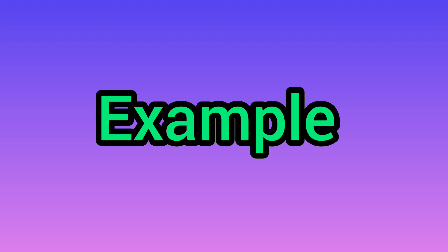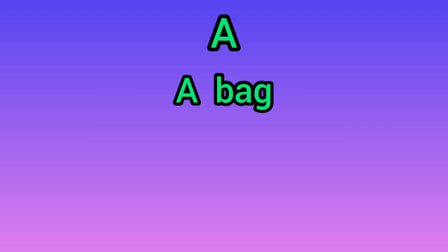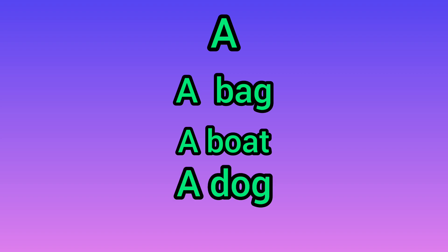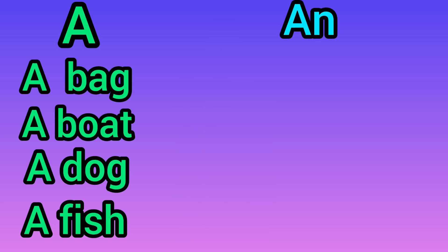Example. A — a bag. B is a consonant, so we will use A. A boat. B is a consonant, so we will use A. A dog. D is a consonant, so we will use A. A fish. F is a consonant, so we will use A.